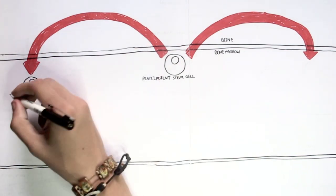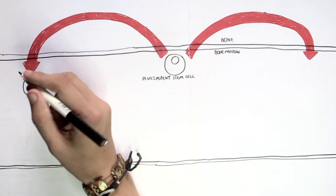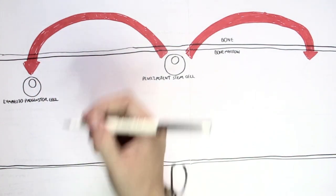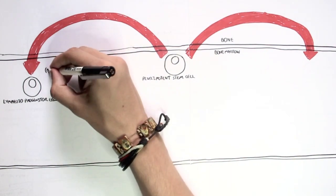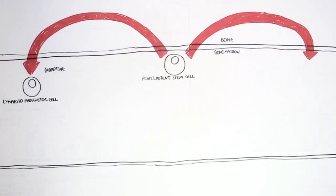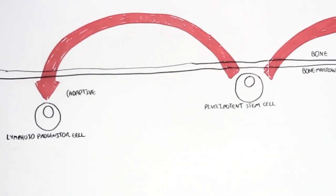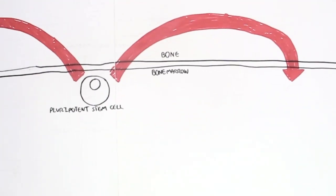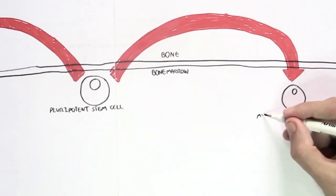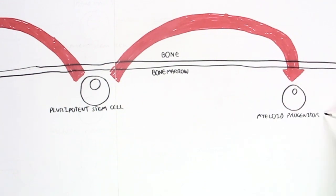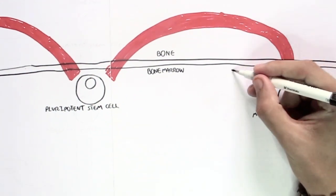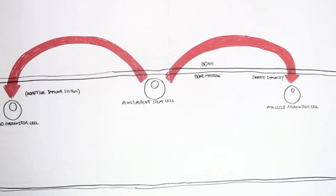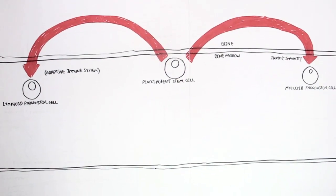These pluripotent stem cells divide to produce two types of cells first. They divide to produce either the lymphoid progenitor cell, which will mostly give rise to cells of the adaptive immune system, or the myeloid progenitor cell, which will typically produce immune cells that are part of the innate immune system.